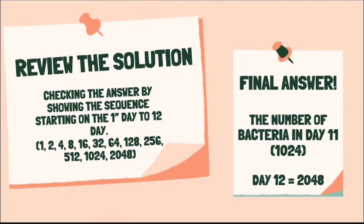To check if our plan is carried out perfectly with no mistakes, we must review our solution by showing the sequence starting on the first day to the twelfth day. Day one: one bacteria. Day two: two bacteria. Day three: four. Day four: eight. Day five: sixteen. Day six: thirty-two. Day seven: sixty-four, and so on and so forth, until we reach that on day eleven we have one thousand and twenty-four bacteria, and on the twelfth day we have two thousand and forty-eight bacteria. So our final answer is the number of bacteria on day eleven, which is one thousand and twenty-four, since the number of bacteria on day twelve is two thousand and forty-eight.